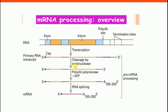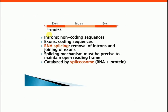To summarize mRNA processing: addition of 5' cap, addition of poly-A tail, and removal of introns by RNA splicing to finally get a messenger RNA. Introns are non-coding sequences present in a gene. Exons are coding sequences that code for the protein. RNA splicing is the removal of introns and joining of exons, carried out by the spliceosome — a complex consisting of RNA and protein.